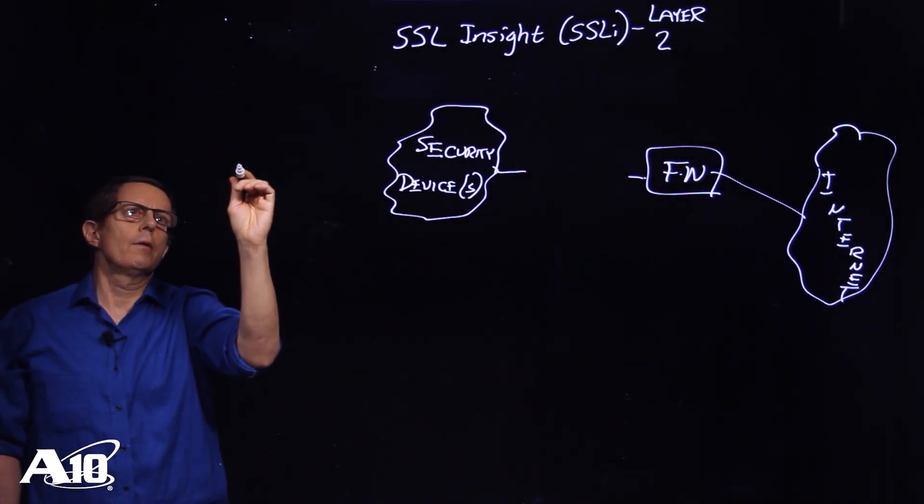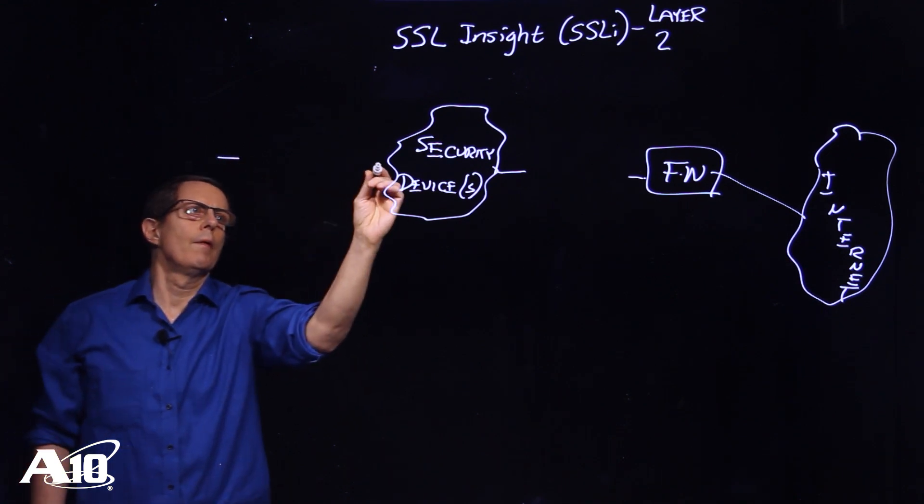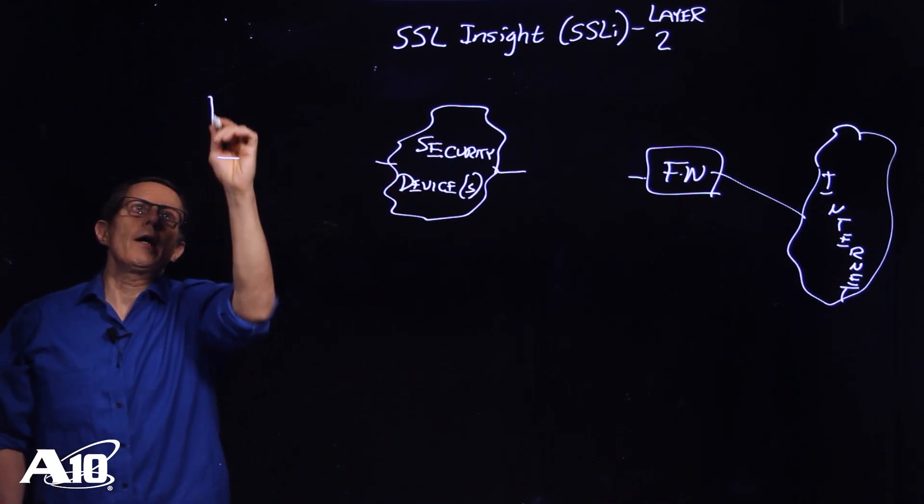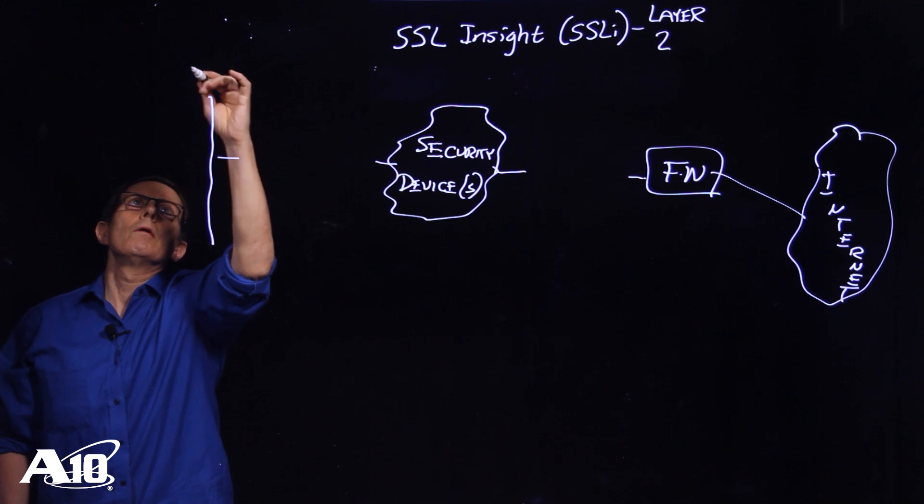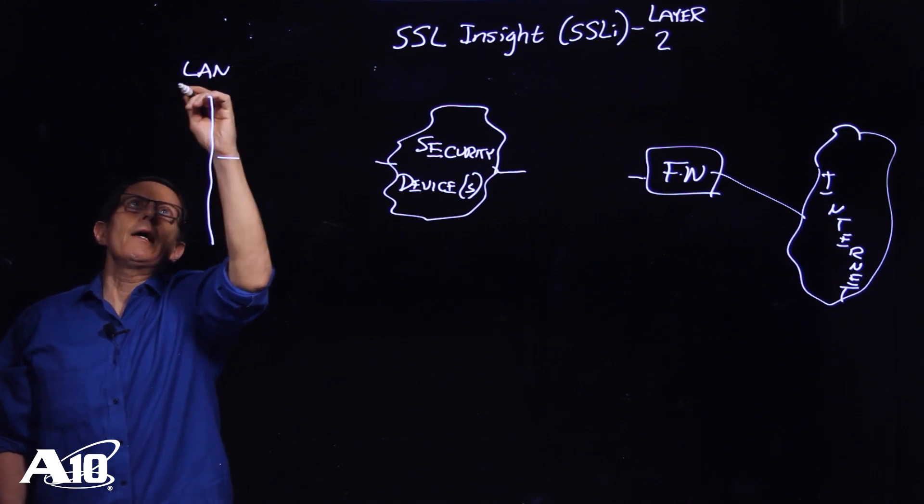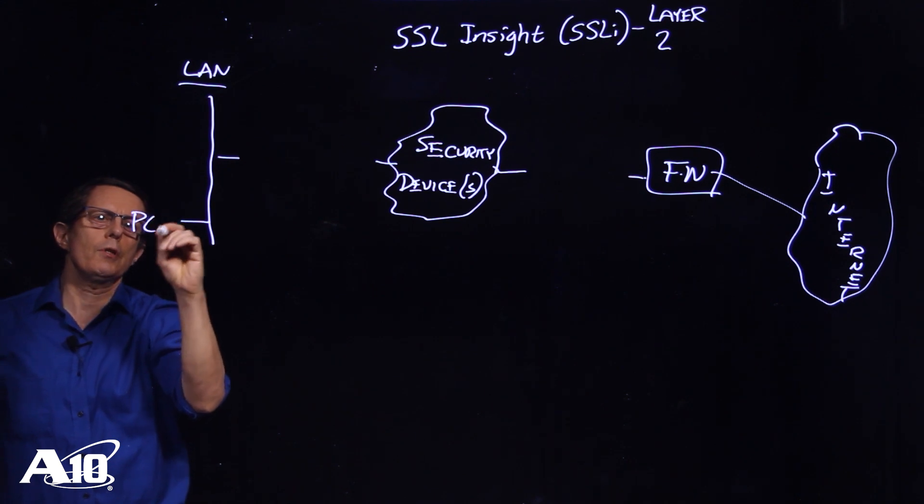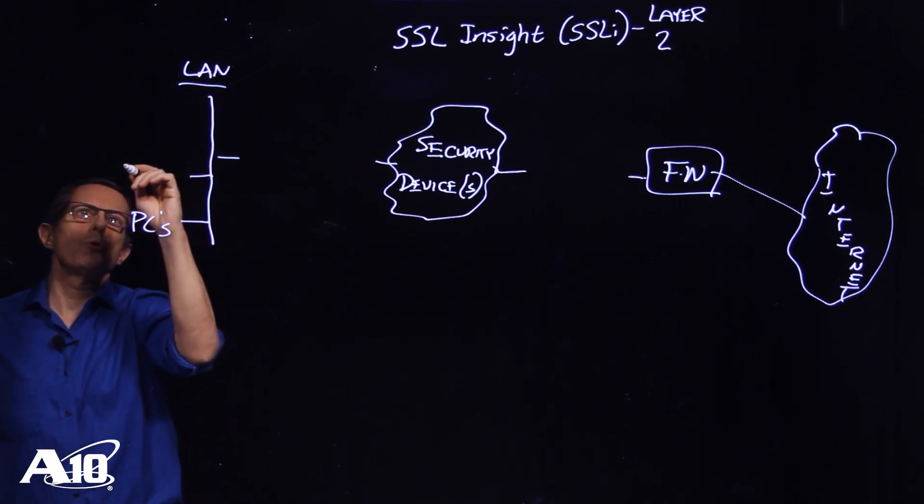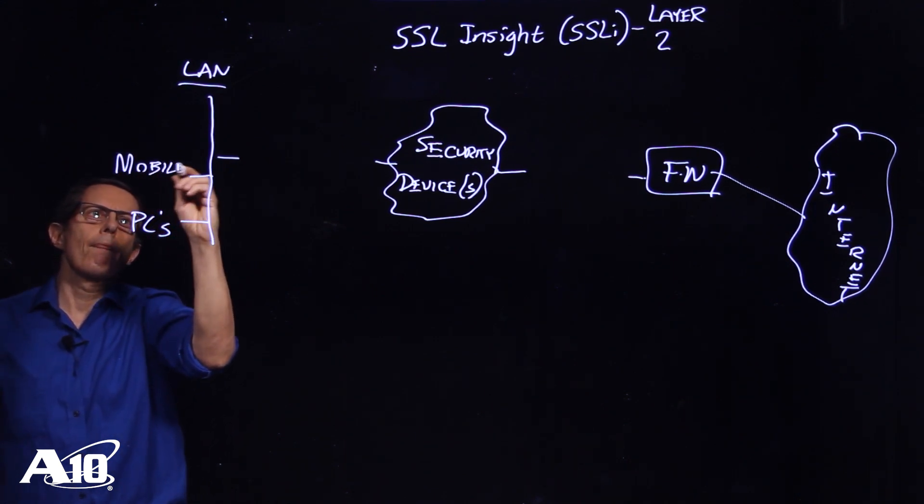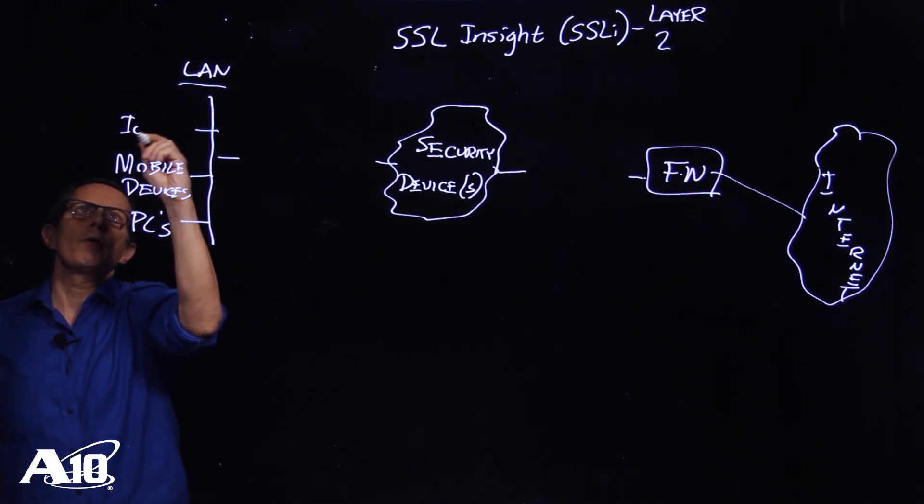Okay, then over on this side will be a client local area network and attached here would be PCs, mobile devices, as well as what's called the Internet of Things.